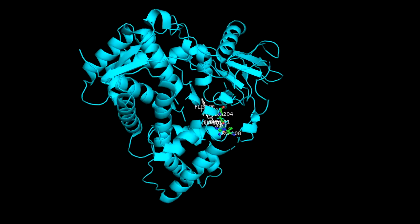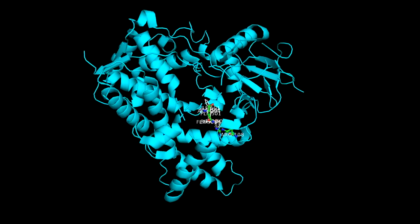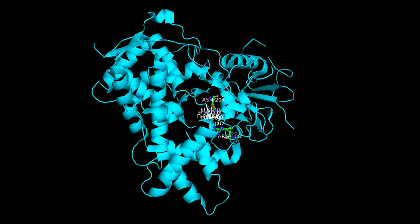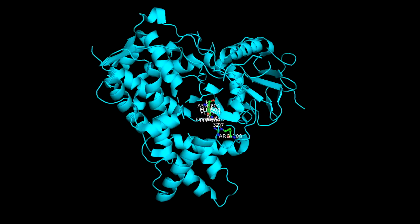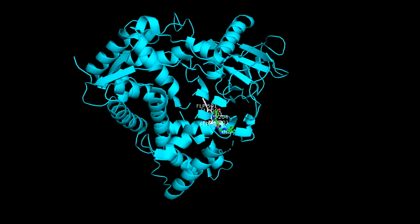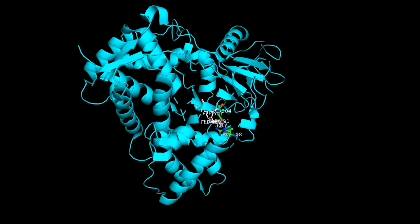In this video we will be discussing the protein 1R9O obtained from the RCSB Protein Databank site. The protein 1R9O is the crystal structure of the human cytochrome P4502C9 complex with flubiprofen at a resolution of 2.0 Angstroms.